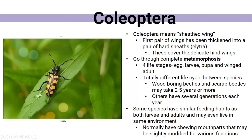The group name Coleoptera simply means 'sheath wing.' Their first pair of wings has been thickened and hardened onto their exoskeleton — they're called the elytra. On this beetle here, you can see those black and yellow zebra-shaped patterns — those are the elytra. These actually cover up the very delicate hind wings that fold up when not in use.